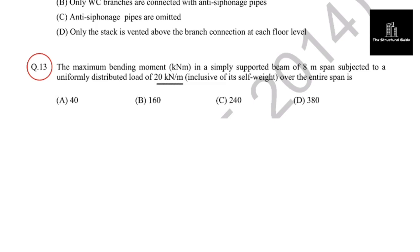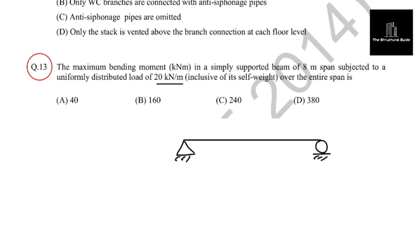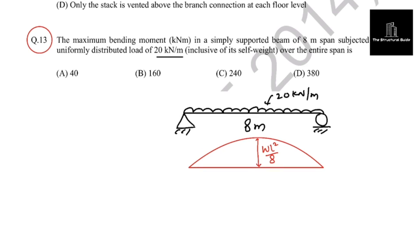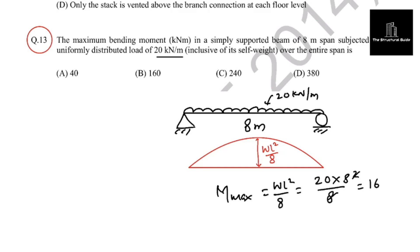The span of the beam is 8 meters and it is simply supported. The bending moment diagram for this beam will be parabolic and the maximum bending moment will occur at the center. The magnitude is equal to WL squared by 8. So the maximum bending moment equals 20 into 8 squared by 8, which equals 160 kilonewton meter.